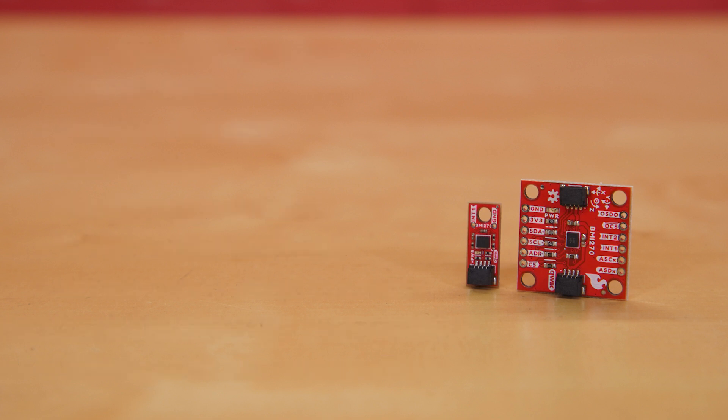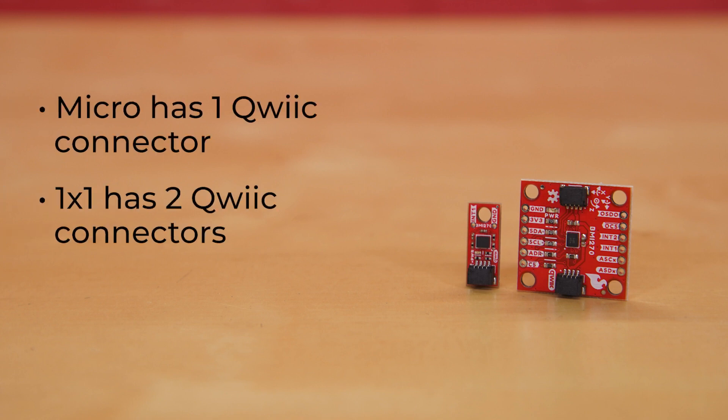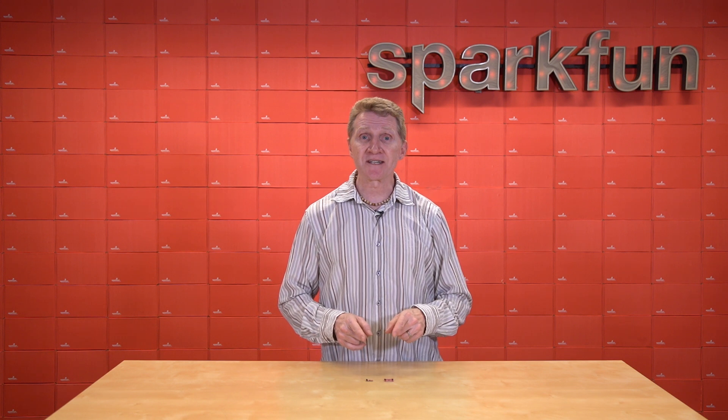The micro footprint breakout hosts a single Qwiic connector for solderless prototyping, and the standard 1x1 footprint breakout has a pair of Qwiic connectors along with pin-outs for breadboarding. Now a couple of important things I want to point out about this sensor.